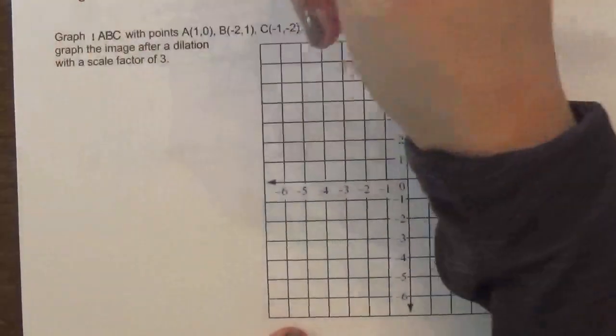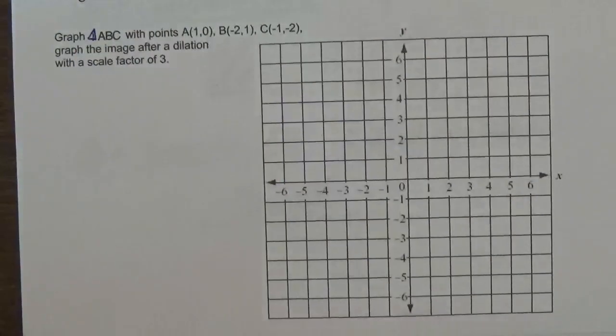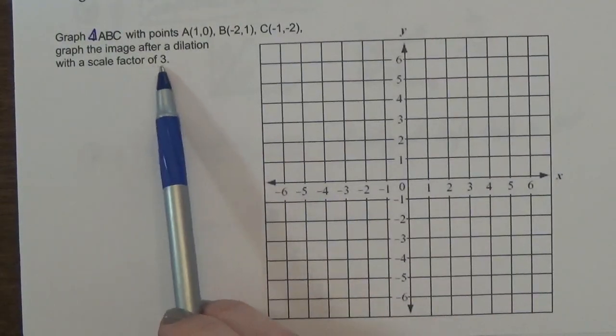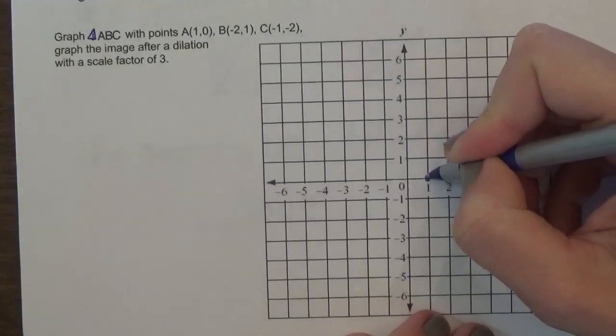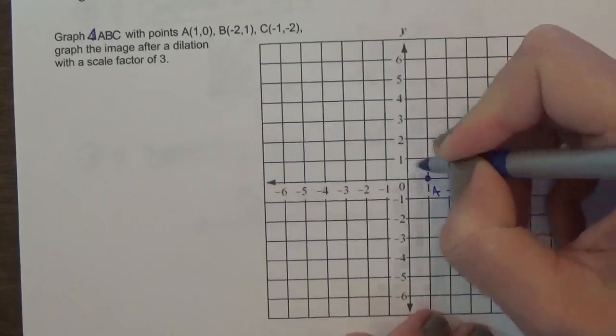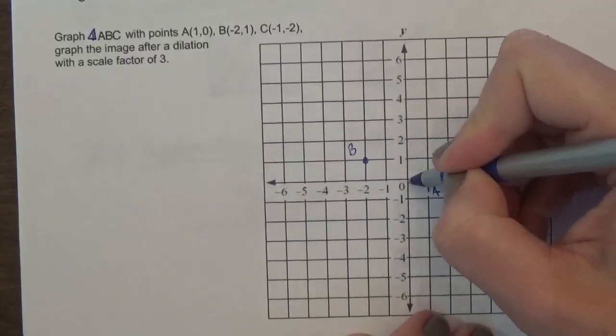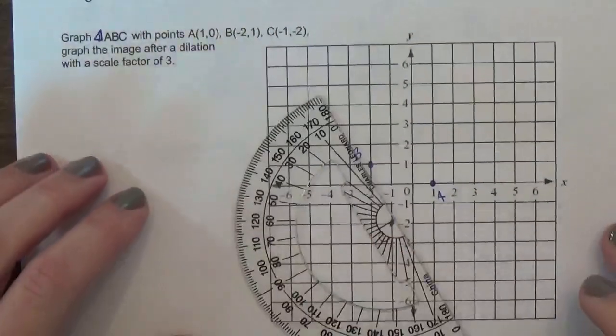Graph triangle ABC with those points and graph the image after a dilation with a scale factor of 3. So 1, 0 is A. Negative 2, 1 is B. And negative 1, negative 2 is C. So we got this little triangle here.